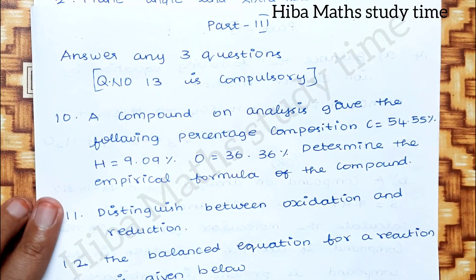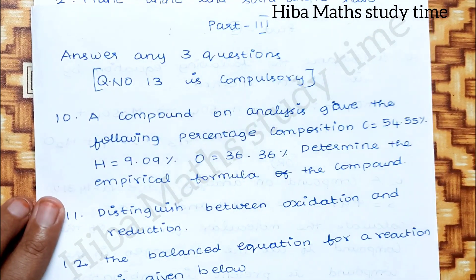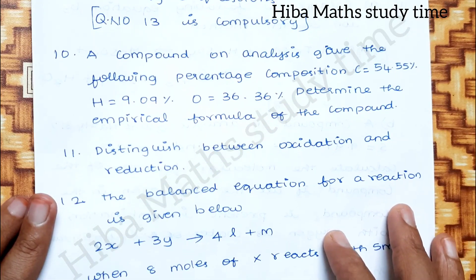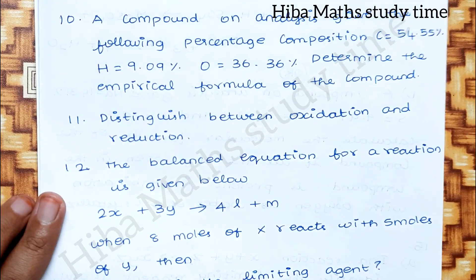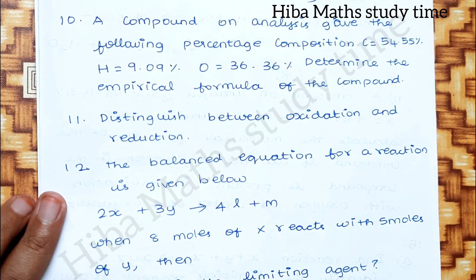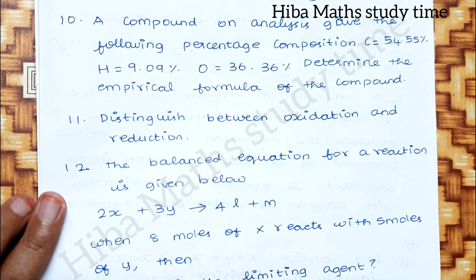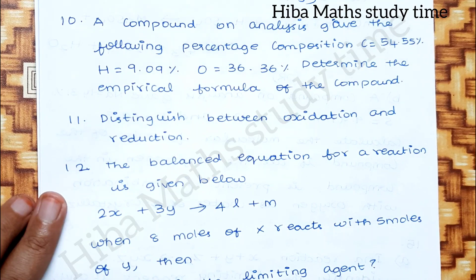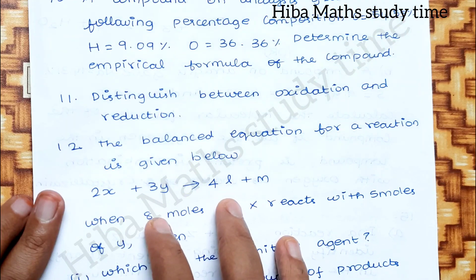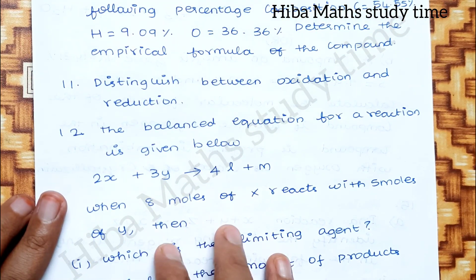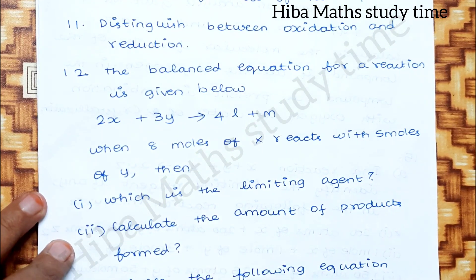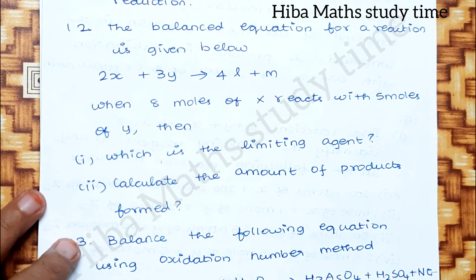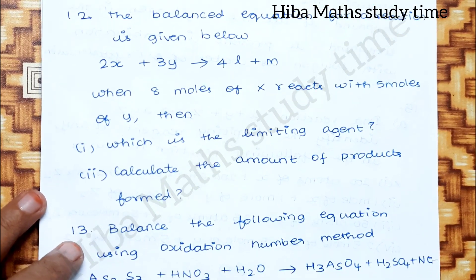Part 3: answer any 3 questions. Question number 13 — the first question is a problem on empirical formula. Distinguish between oxidation and reduction — 12th question. A balanced equation for a reaction is given: when 8 moles of X reacts with 5 moles of Y, identify the limiting agent and calculate the amount of products formed.